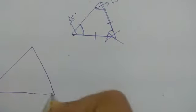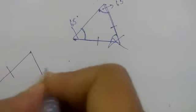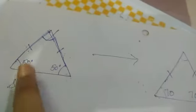A similar concept applies to an equilateral triangle. If all three sides of an equilateral triangle are equal, then all three angles are also equal. So: if two sides are equal, two angles are equal; if three sides are equal, three angles are equal.